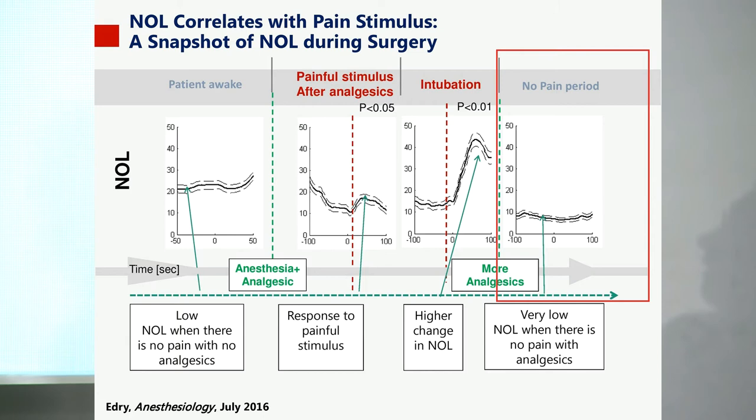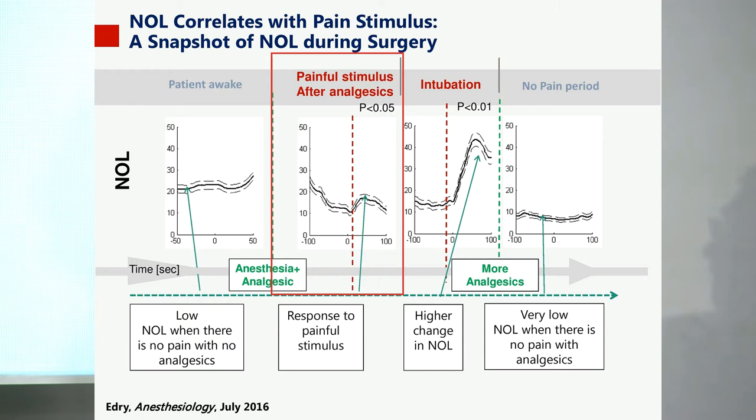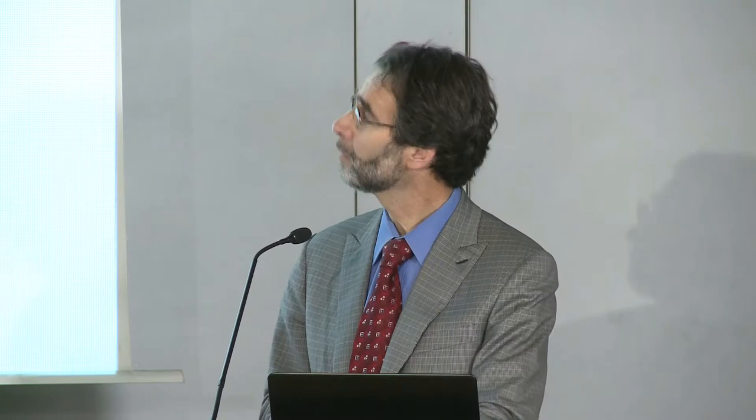And when you have no pain and lots of analgesia, you get a super low level — with analgesia, you've reduced the value from 20 to 10.